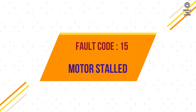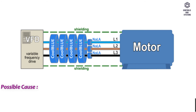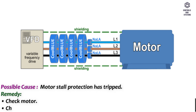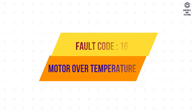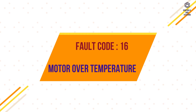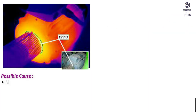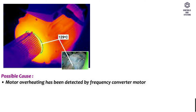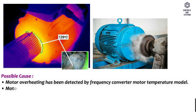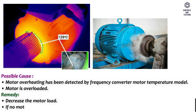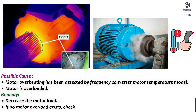Fault code 15 – Motor stalled. Possible cause: motor stall protection has tripped. Remedy: check motor, check that the pump or fan is not blocked. Fault code 16 – Motor over temperature. Possible cause: motor overheating has been detected by the frequency converter motor temperature model; motor is overloaded. Remedy: decrease the motor load. If no motor overload exists, check the temperature model parameters.